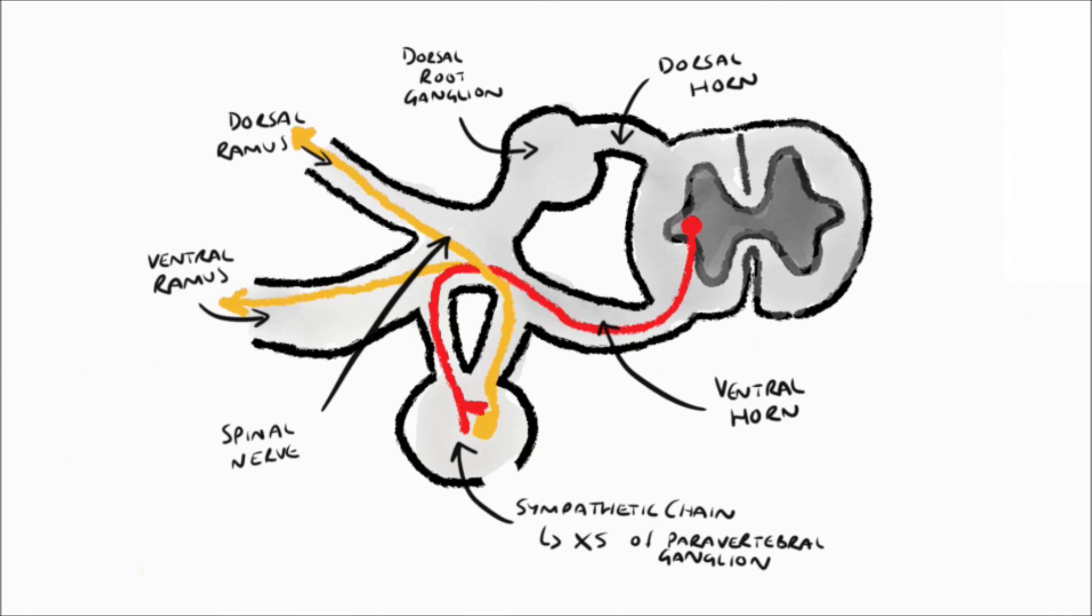Note though that only the ventral rami supply the limbs, only the ventral rami form the brachial or the lumbar and sacral plexuses. Therefore all sympathetic innervation for the limbs must go via the ventral ramus. In my drawing here I have the preganglionic nerve entering the sympathetic chain at the same level, but remember to keep in mind that it may actually have come from above or below.